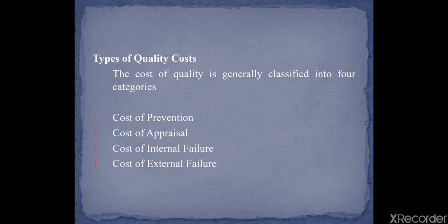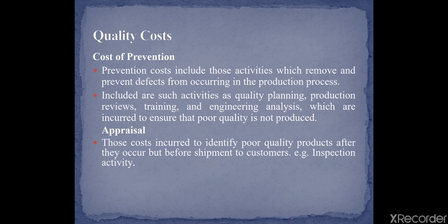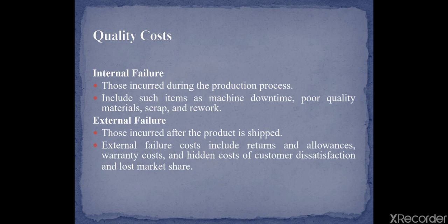The cost of non-quality includes: cost of prevention, cost of appraisal, cost of internal failure, and cost of external failure. Prevention costs include activities that remove and prevent defects from occurring in the production process, such as quality planning, production reviewing, training, and engineering analysis. Appraisal costs are incurred to identify poor quality of the product after it occurs but before shipment to the customer, such as inspection activities. Internal and external failure costs were discussed in previous layers.